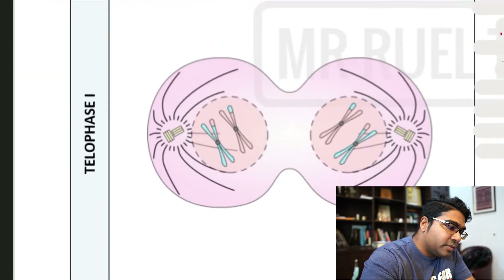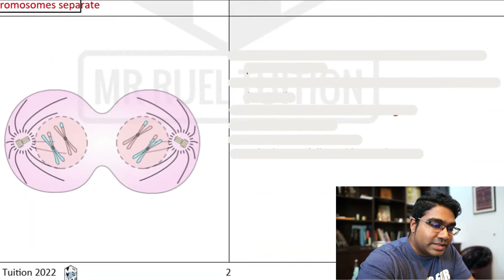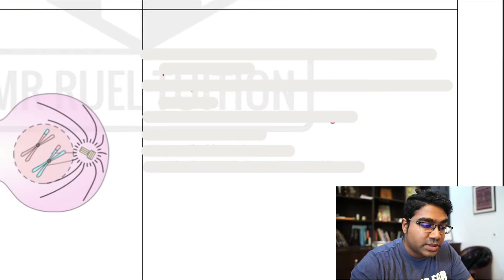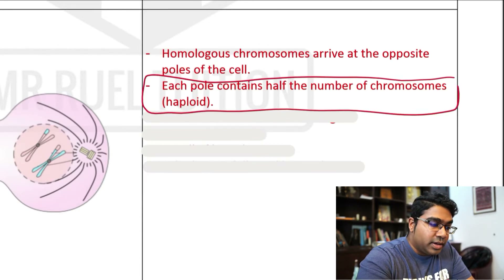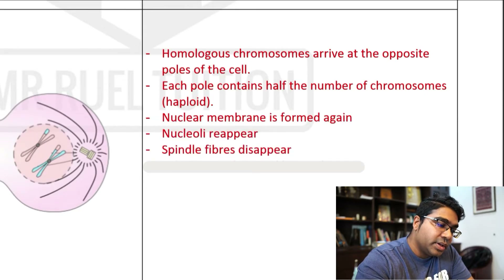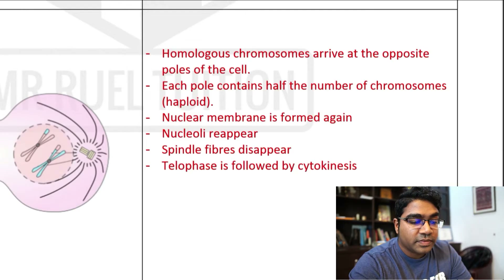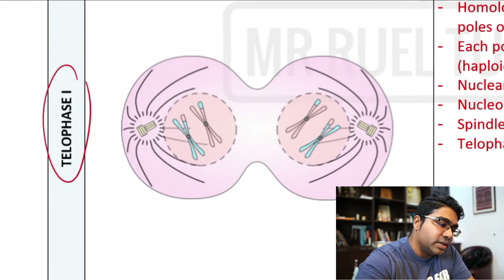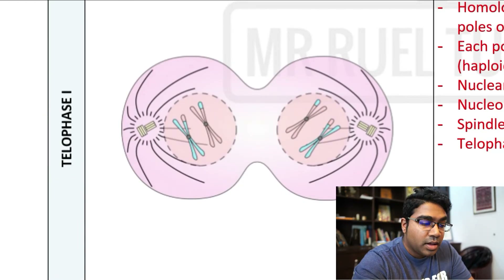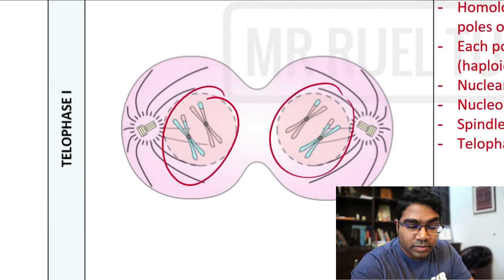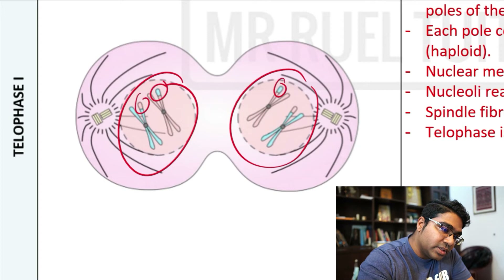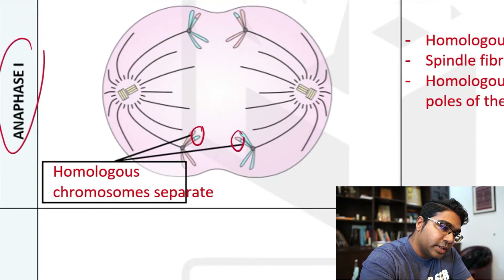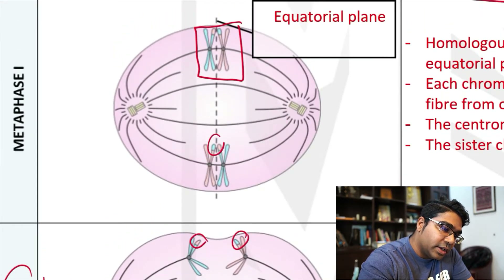After anaphase, we have telophase 1. What occurs in telophase 1 is exactly the same as in telophase of mitosis: the homologous chromosomes arrive at the opposite poles, and each pole now contains half. The nuclear membrane is formed again, nucleoli reappear, and spindle fibers disappear. What is unique to telophase 1 is that we began with four chromosomes and ended with only two on each side. Crossing over can be seen in all the diagrams of meiosis 1 — this is how you tell it is meiosis and not mitosis.